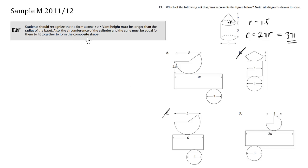Let's read this little tip. The circumference of a cylinder and the cone must be equal for them to fit together to form the composite shape. So the idea of a nice rectangle rolling up to match this interesting shape, we have to set the circumference to be equal to the width, which we just did. Now let's read this other point. Students should recognize that to form a cone, S, which is the slant height, is greater than r.